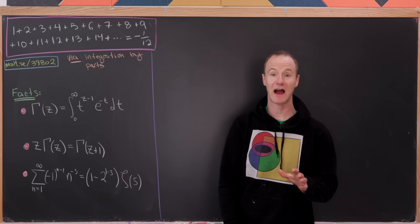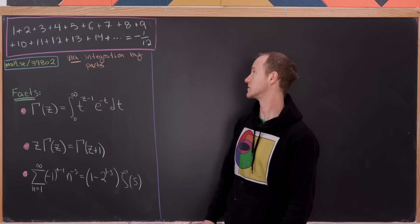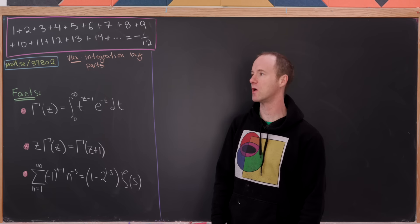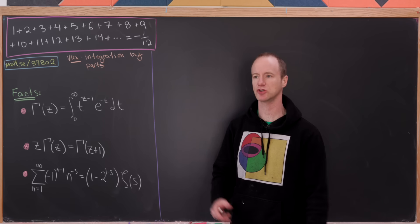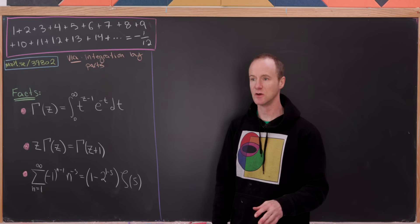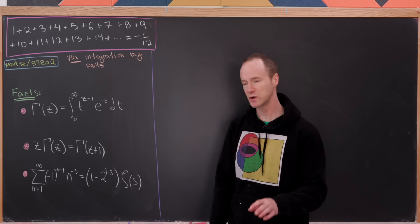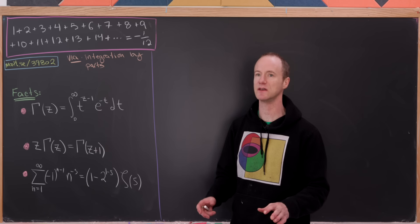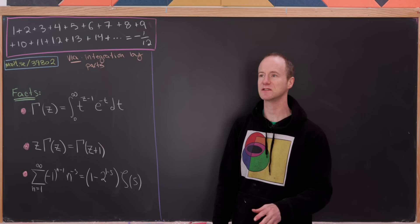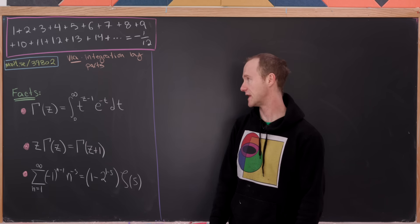Today we're going to establish one of the most viral formulas on the internet: the sum of all natural numbers equals minus 1/12. But of course, really, the sum of all natural numbers is divergent because it's getting larger and larger. So we interpret this as the Riemann zeta function evaluated at negative 1, which we'll introduce in just a second, and think about that as some sort of regularization of this sum.